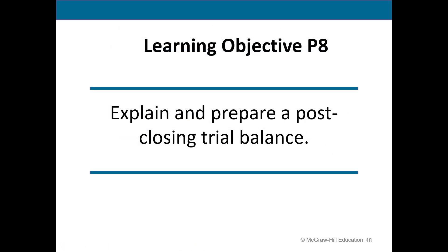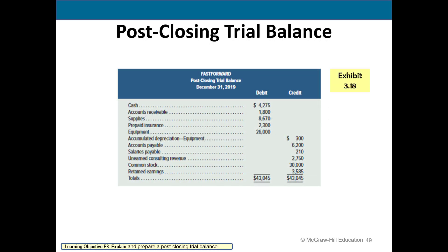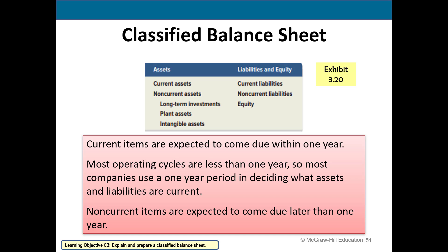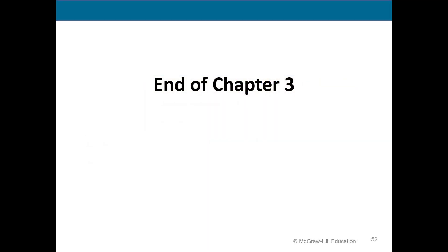Next we prepare a post-closing trial balance using the permanent account balances from the balance sheet, verifying total debits equal total credits. Finally, we look at the classified balance sheet, which separates current and non-current items for both assets and liabilities. Current items are expected within one year; non-current items come due later than one year. This concludes the recorded lecture for Chapter 3.